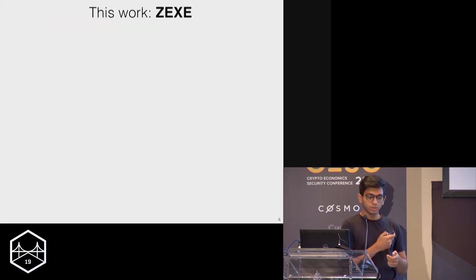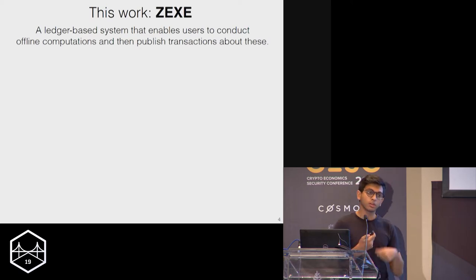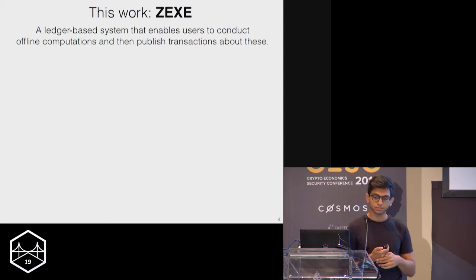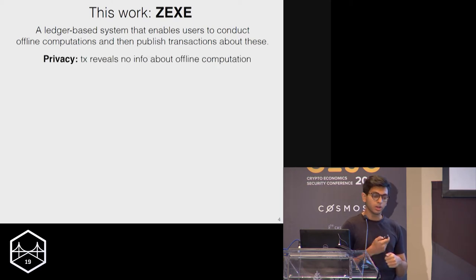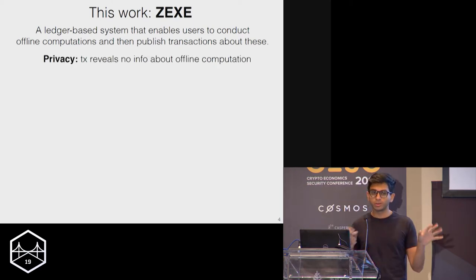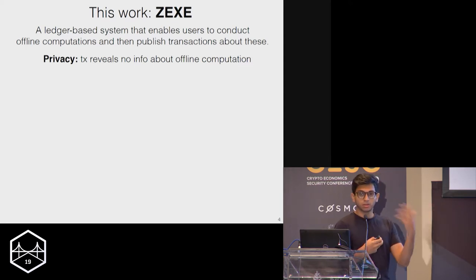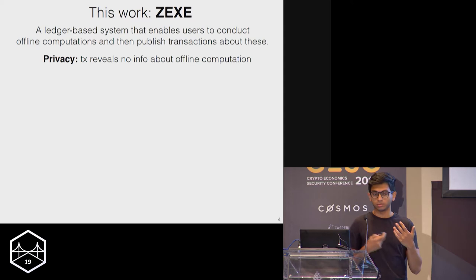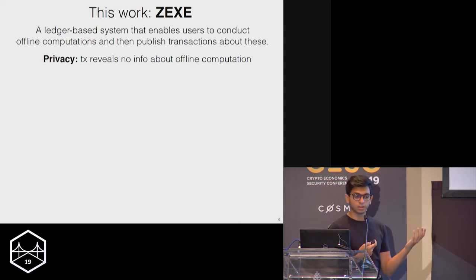What we do in Zexi is construct a system that allows users to conduct computations offline and then publish to the ledger short transactions that attest to the correctness of the computation. The privacy property we achieve means the transaction reveals no information about the offline computation — the program that is running, the data that is input to the program, and the caller are all hidden in Zexi.